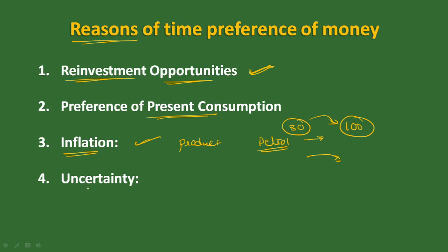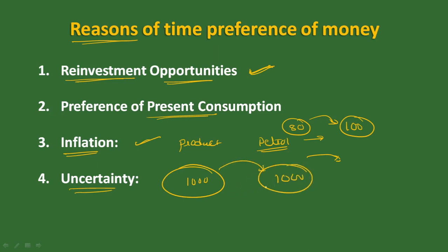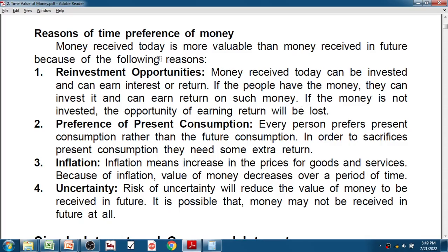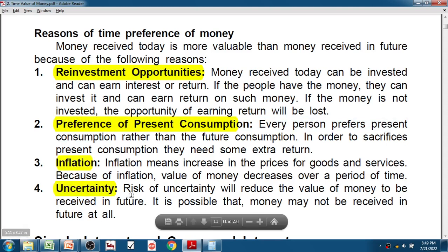The next reason for preference is uncertainty. If you receive 1,000 rupees today versus 1,000 rupees after 1 year, there is uncertainty about the future amount. This is called uncertainty. So, the reasons for time preference are: reinvestment opportunity, preference of present consumption, inflation, and uncertainty. Next video: simple interest and compound interest.